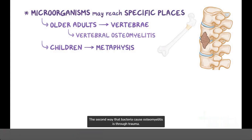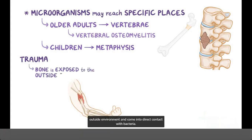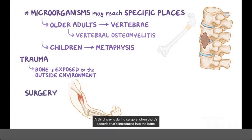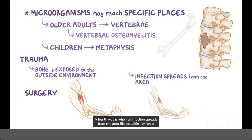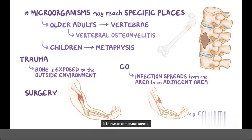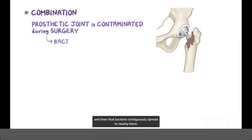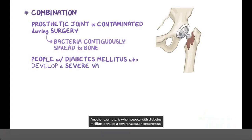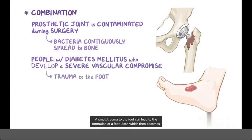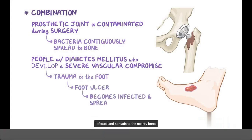The second way that bacteria cause osteomyelitis is through trauma — for example, in an open fracture after an accident, the bone may get exposed to the outside environment and come into direct contact with bacteria. A third way is during surgery when bacteria are introduced into the bone. A fourth way is contiguous spread, when an infection spreads from one area, like cellulitis — an infection of the dermis layer of the skin — to an adjacent area like the bone. There can also be combinations of these, such as when a prosthetic joint becomes contaminated during surgery and bacteria contiguously spread to nearby bone, or when people with diabetes develop a foot ulcer that becomes infected and spreads to nearby bone.